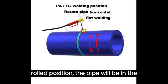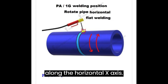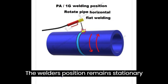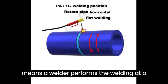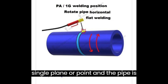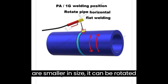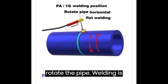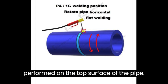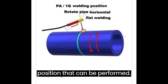In the 1G welding position, or horizontal rolled position, the pipe will be in the horizontal position and it can be rotated along the horizontal X axis. The welder's position remains stationary — the welder performs the welding at a single plane or point while the pipe is being rotated slowly. If the pipes are smaller in size, they can be rotated manually; otherwise, equipment is used to rotate the pipe.